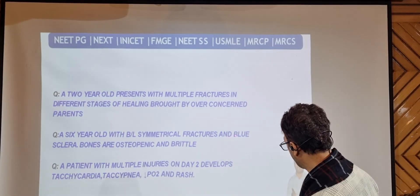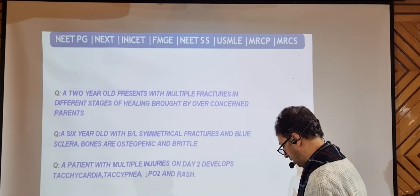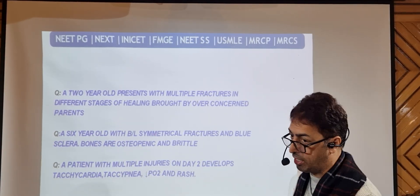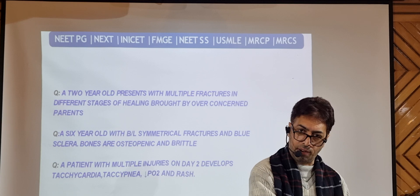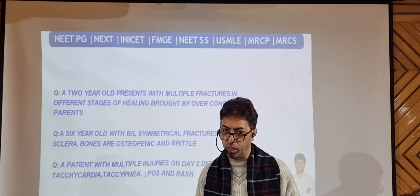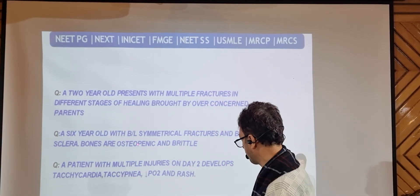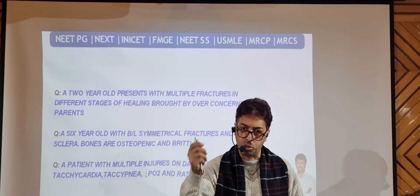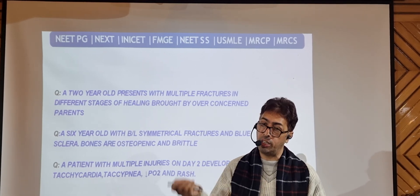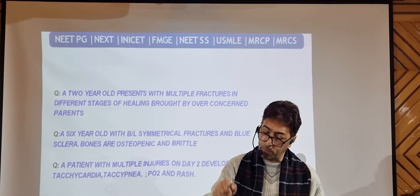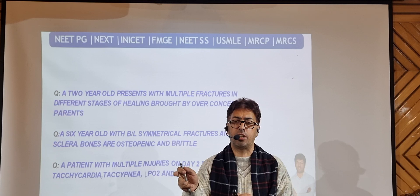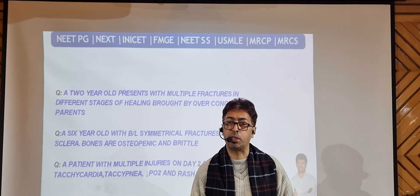Clinical scenario two: a six-year-old with bilateral symmetrical fractures, blue sclerae, osteopenic and brittle bones. This is a different scenario entirely. The symmetry of fractures is classical of a systemic disease. Blue sclerae is hugely associated with osteogenesis imperfecta. Brittle bones and osteopenia all point towards osteogenesis imperfecta. This differentiates it from battered baby syndrome — here the fractures are symmetric, not in different stages of healing, with blue sclerae and no social red flags.